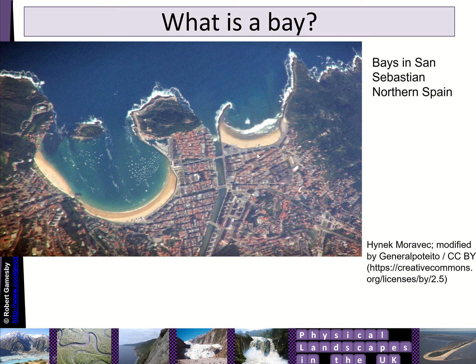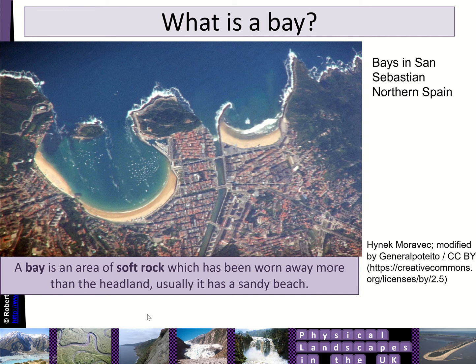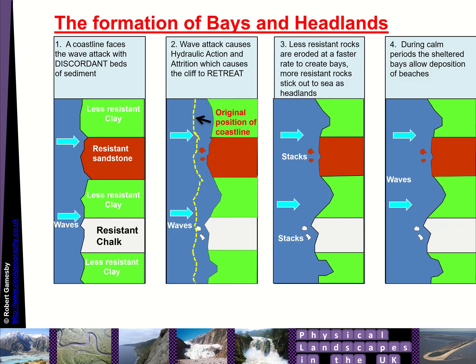A bay — you can see one there in a brilliant part of northern Spain, San Sebastián — is generally an area of weaker or softer rock which has been worn away more than the headland. Bays normally contain a sandy beach because of wave refraction and the fact that they're lower energy environments, which allows sediment to be deposited.